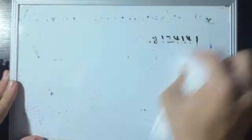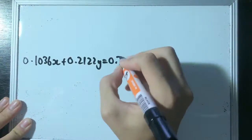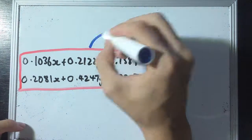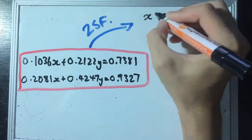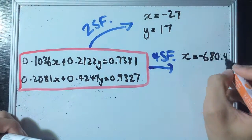And so, we can see that using the same pair of simultaneous equations, but just taking our answers to different accuracy levels, to different amounts of significant figures, we get three very, very different answers.